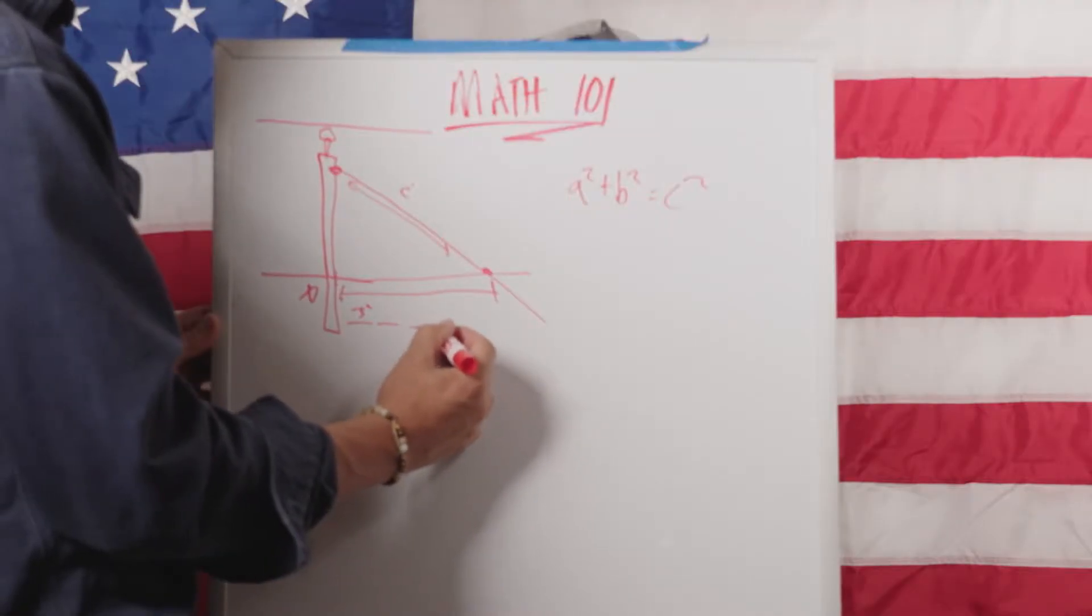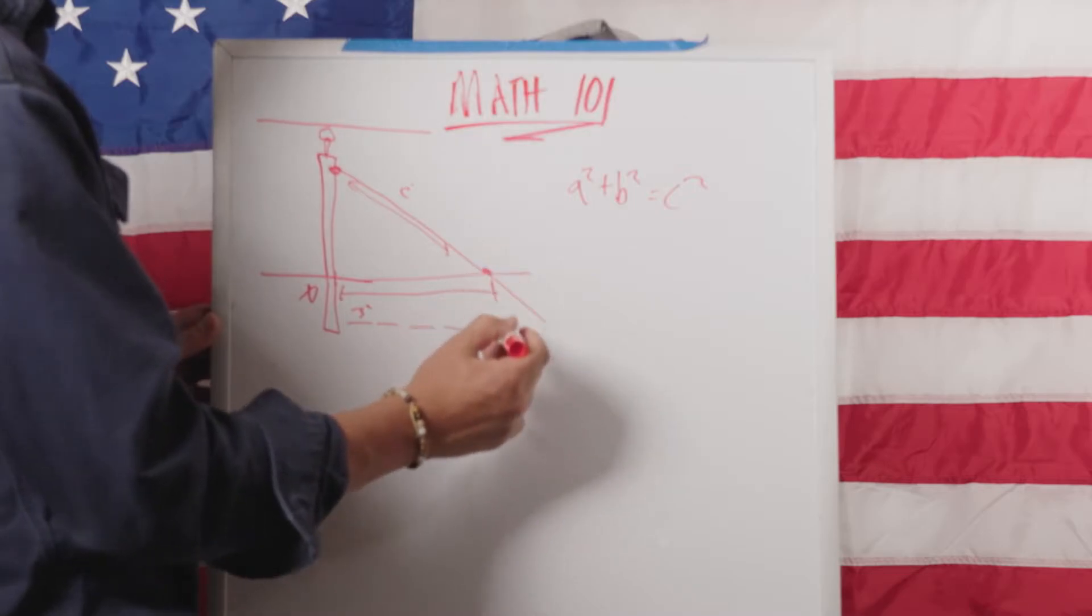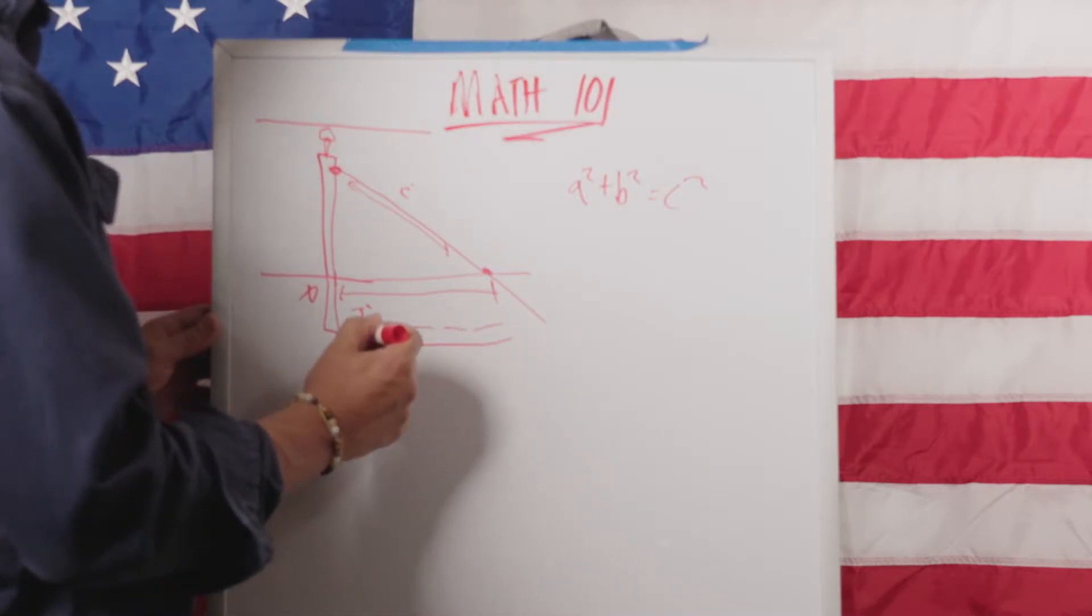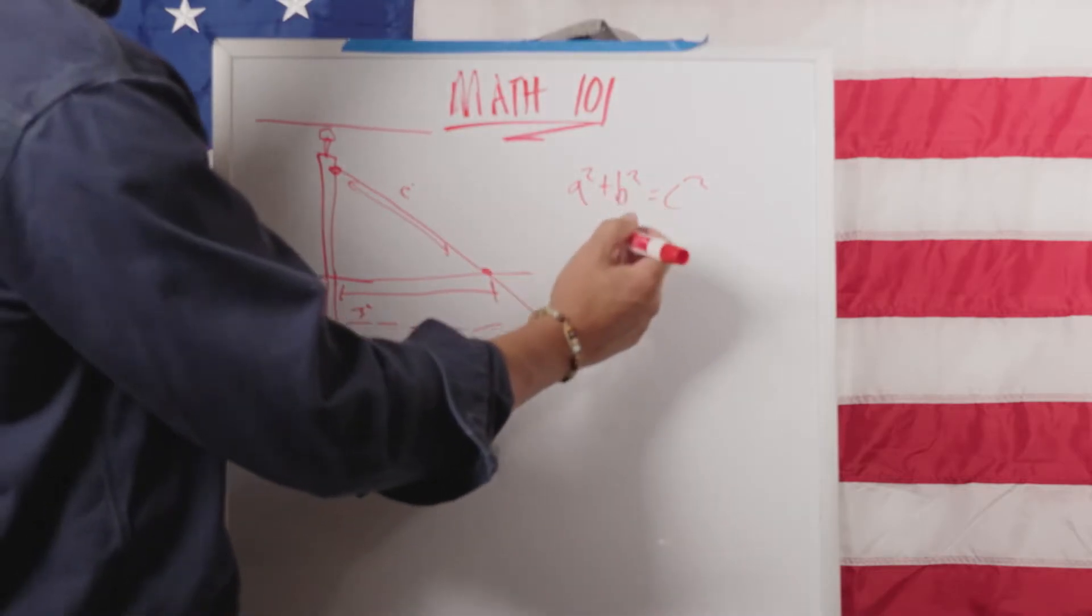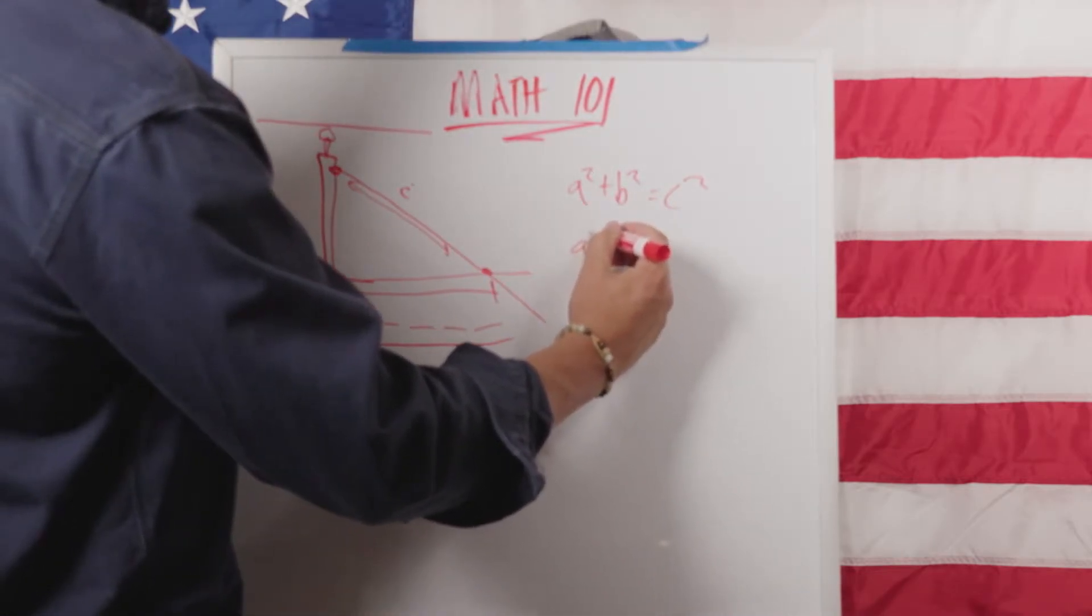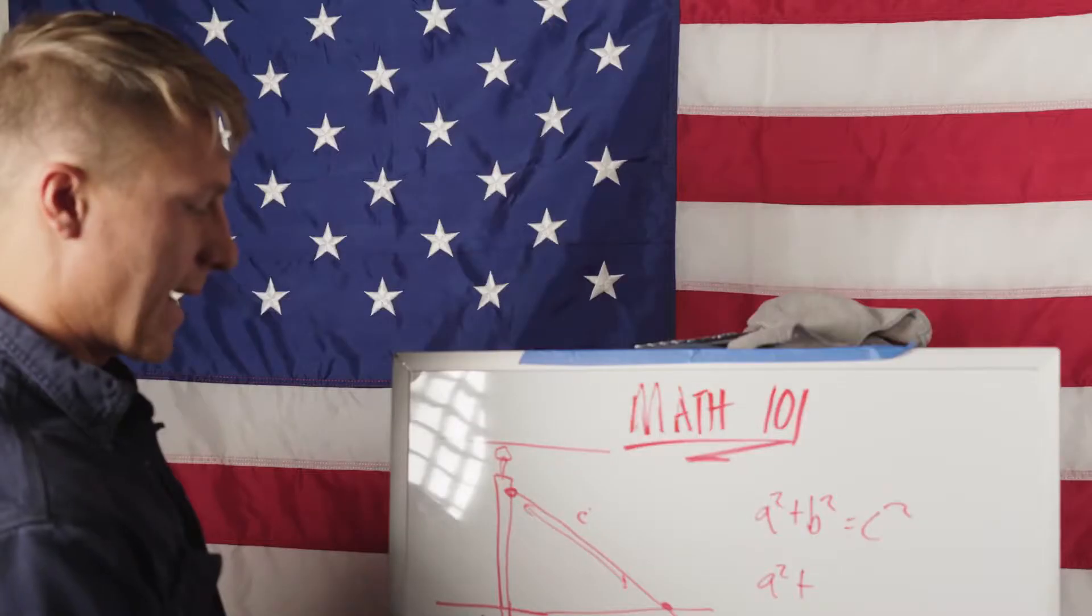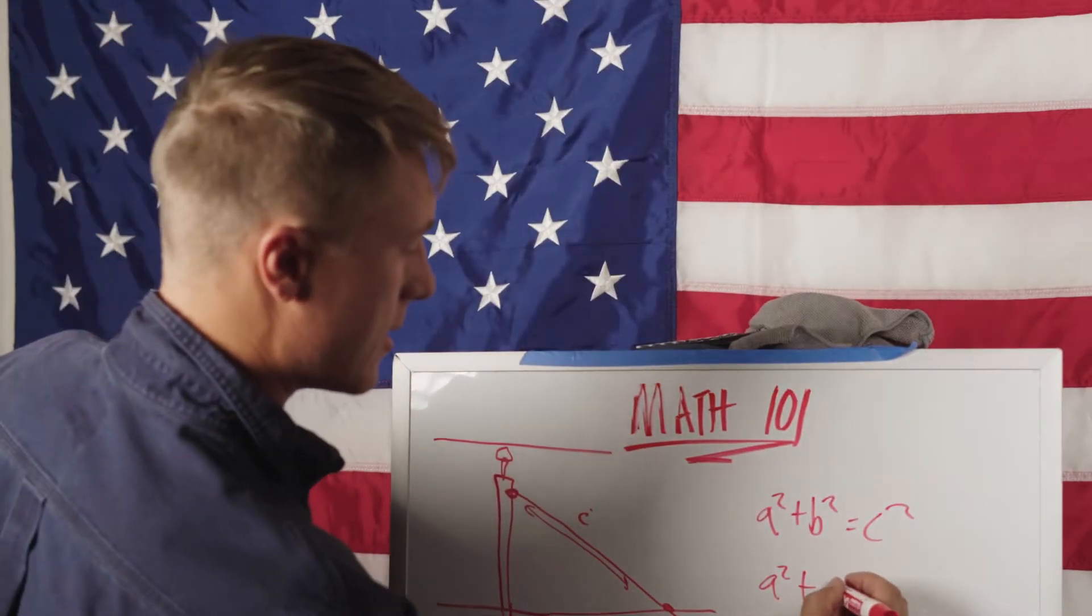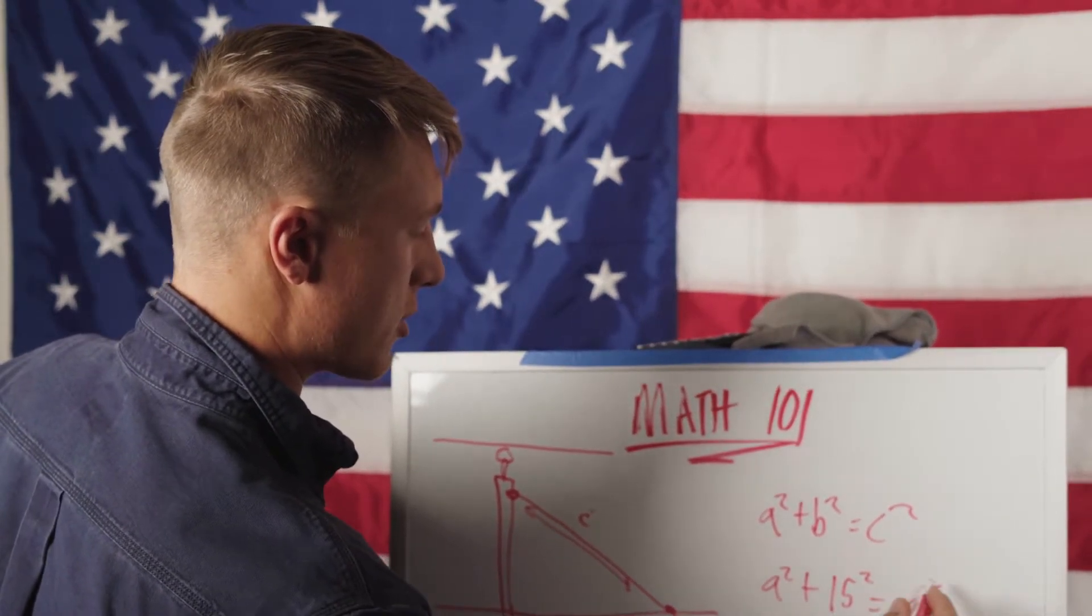And you're going to have 3, 6, 9, 12, 15 feet approximately from the anchor back to your buddy or pole. So we know that value, we can call that B. So we know a² + this value, so 3, 6, 9, 12, 15 feet.